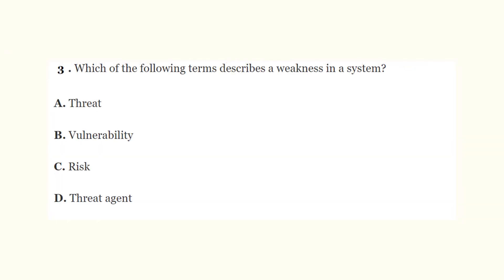Question number three: which of the following terms describes a weakness in a system? The correct answer is vulnerability. This should be very easy — vulnerability is a weakness in a system.